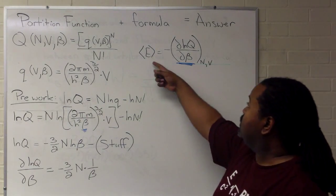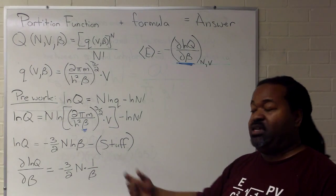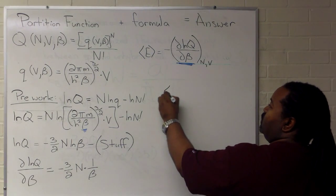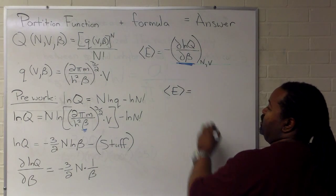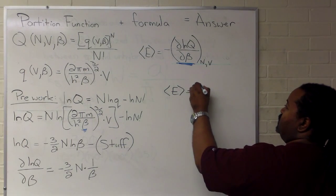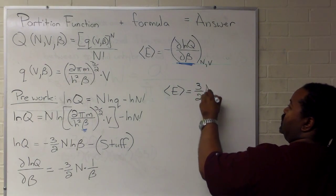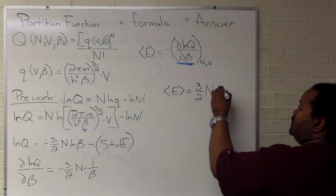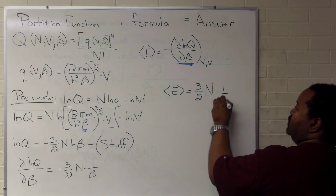So what we'll have then is that the energy is 3 halves n for the number of particles in the system times 1 over beta.